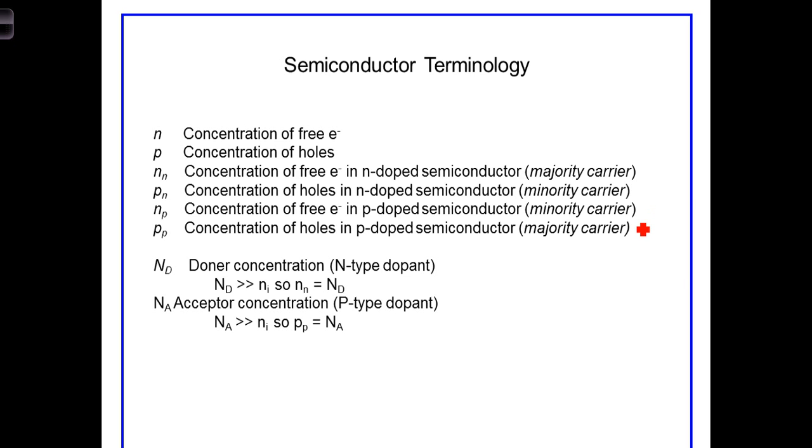Two final terms. Capital N sub d refers to the donor concentration. It's the concentration of dopant that has been placed into the semiconductor. Now, generally speaking, the dopant concentration will be much greater than the intrinsic concentration, on the order of 10 to the 5th, 10 to the 10th, 10 to the 15th times as great, depending upon the doping concentrations. So generally speaking,